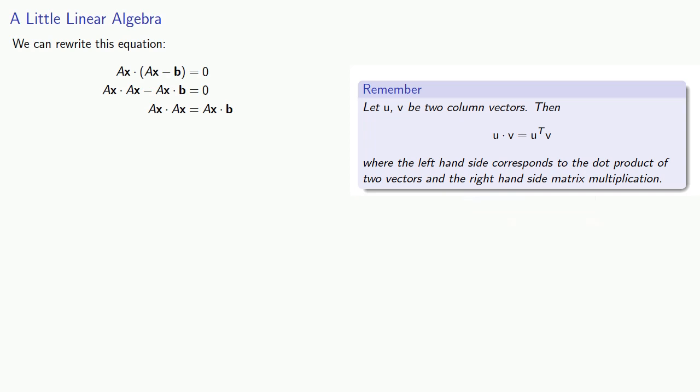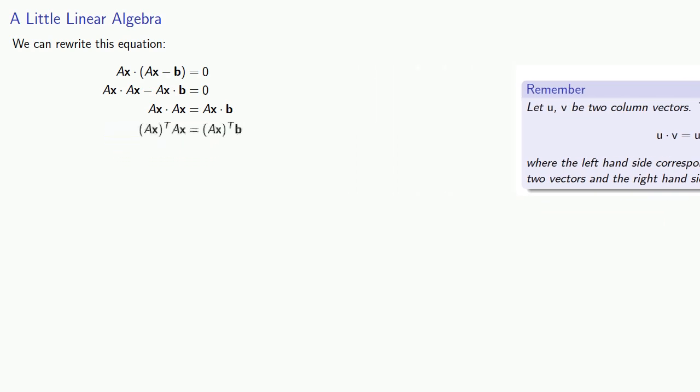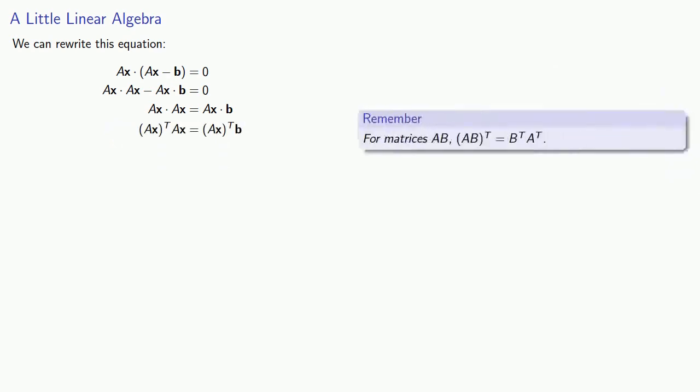So I can rewrite my two dot products. And we have a mess of transposes here, but remember that for any matrices A, B, AB transpose is the same as B transpose A transpose. So I can rewrite my transposes.